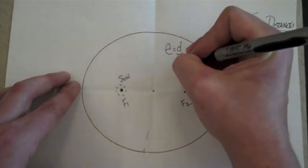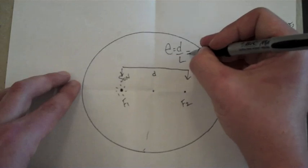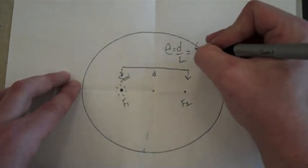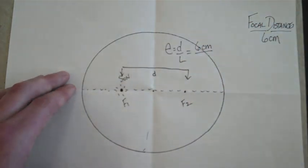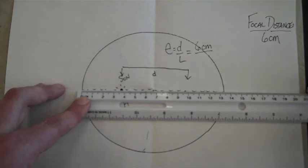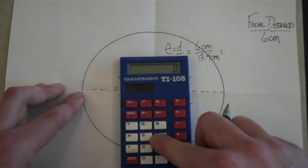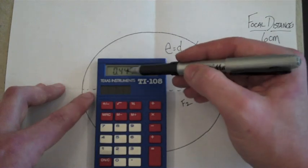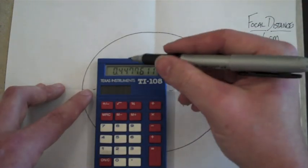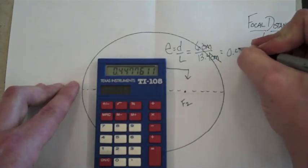E equals D over L. Again, F1 to F2, that's going to be my D. So E equals D over L. My distance is going to be 6 centimeters in this case. I'm going to divide that by my major axis, the long line that I just drew. Round that to the nearest tenth. It's about 13.4 centimeters. So that's going to equal 6 divided by 13.4. Turns out to be 0.4477611. Remember, we go to three decimal places. No units with eccentricity. But the 7 in the ten-thousandths place makes it bump up to an 8. 0.448.